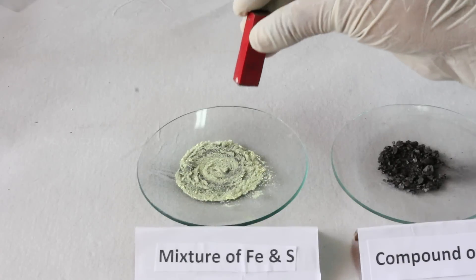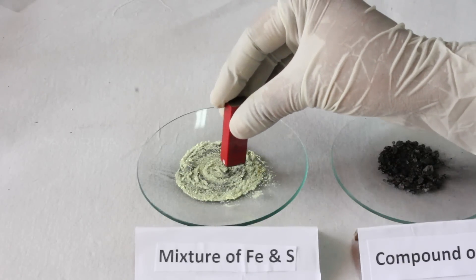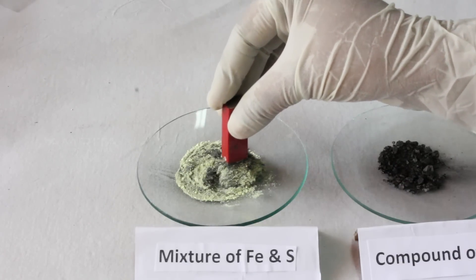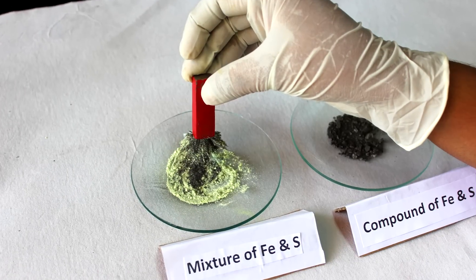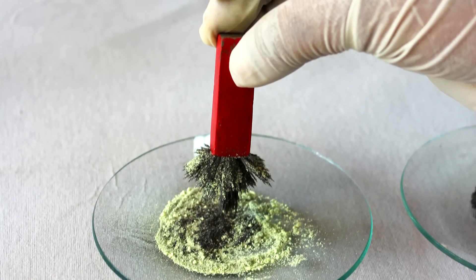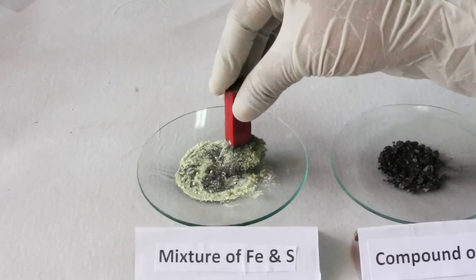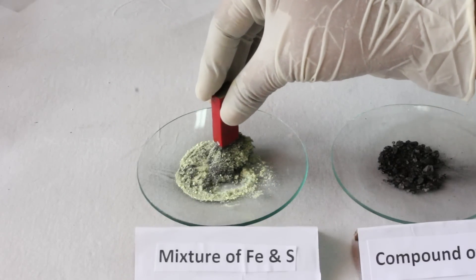Now, show a magnet over the watch glass in which the mixture of iron and sulphur has been taken. We can see that iron filings cling to the magnet, which indicates that iron retains its properties.